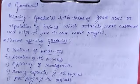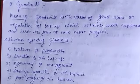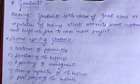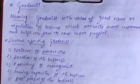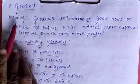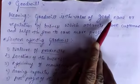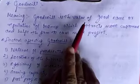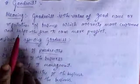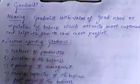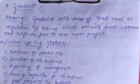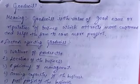Hello students. We have already completed all the ratio calculation and all the theory part of the admission of a partner. Now we are starting goodwill and its treatment in the accounts. Goodwill is the value of the good name or reputation of the business which attracts more customers and helps the firm to earn more profit. That is called goodwill.